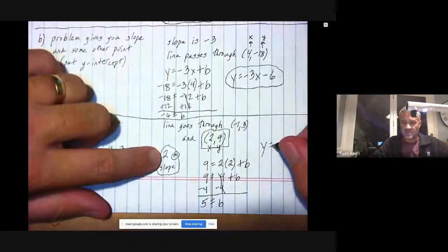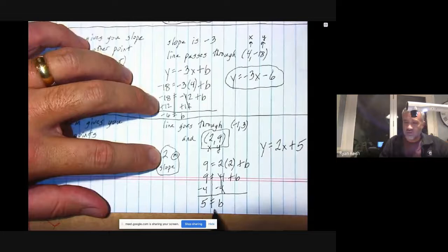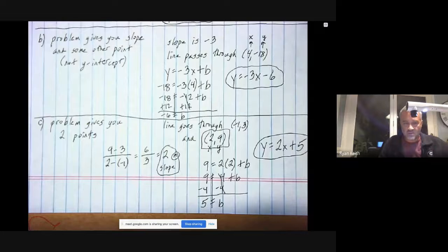So our equation can now be written out fully: y equals, there's our slope from before, and then our b value we just figured out right here, and this last one is done.